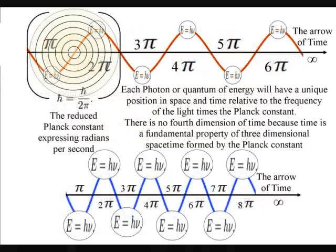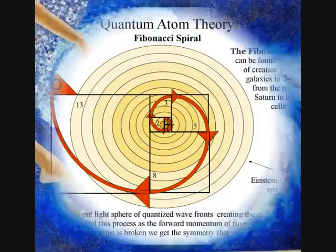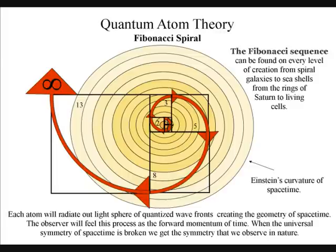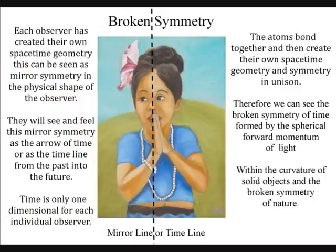Everything is governed by the geometry and symmetry of spacetime, from seashells to spiral galaxies, to the evolution of life itself. Therefore the observer will feel time as only having one dimension, but in reality the observer is creating their own symmetry and geometry in three dimensional spacetime.